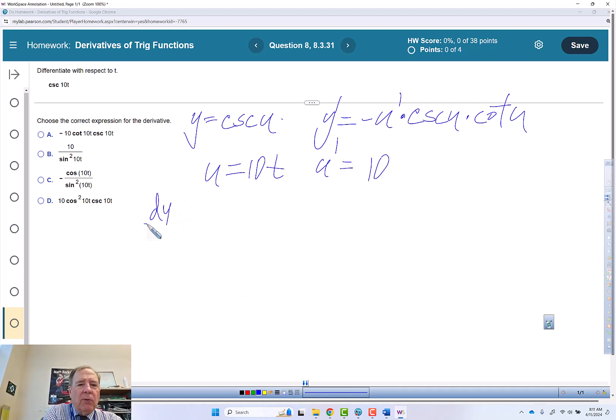So dy over dx is negative u prime. So that's 10 times cosecant of u, which is 10t times cotangent of u. So that's 10t.